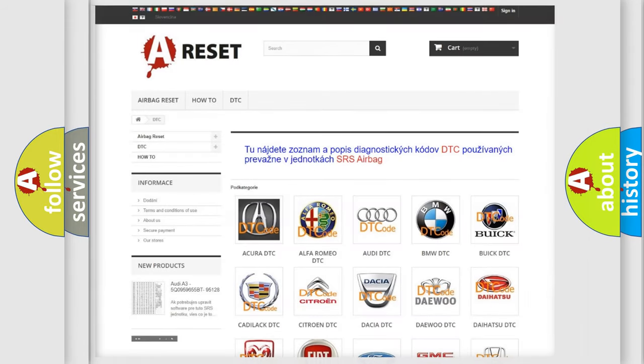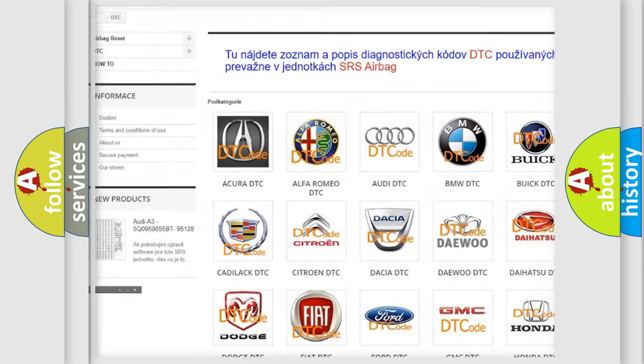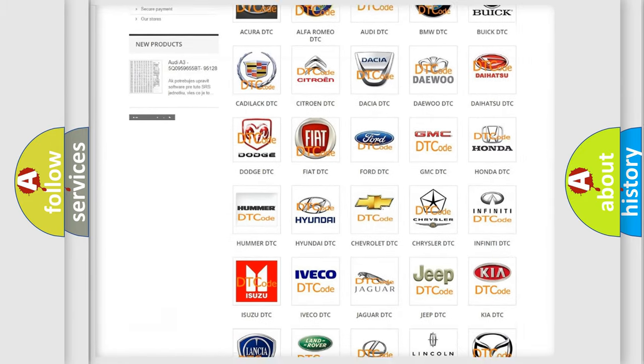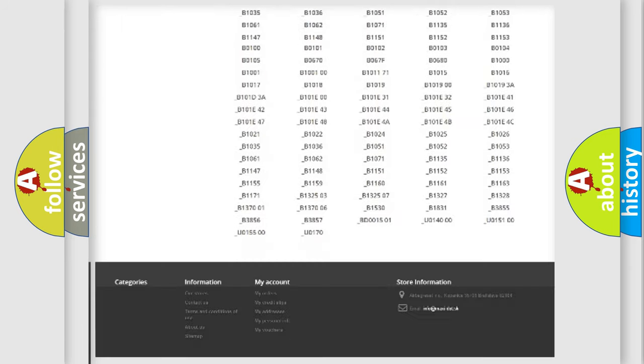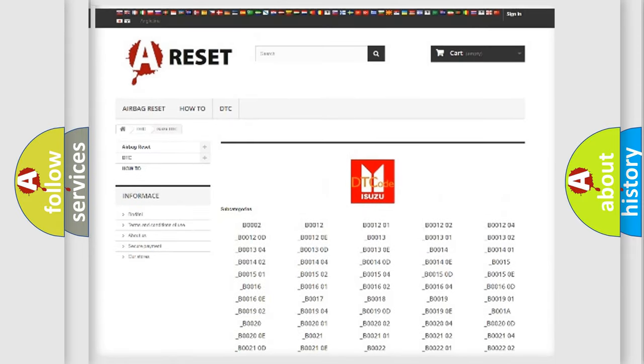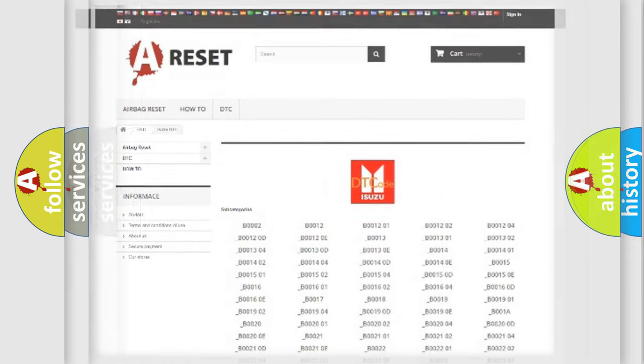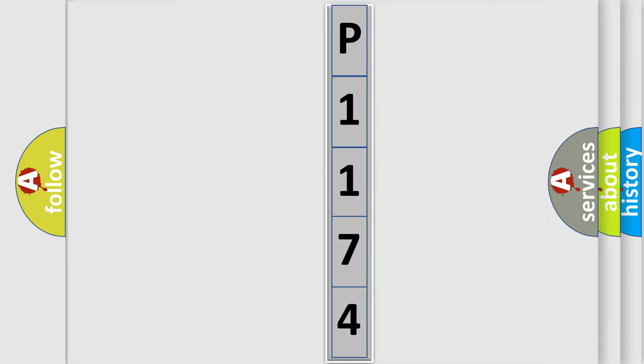Our website airbagreset.sk produces useful videos for you. You do not have to go through the OBD2 protocol anymore to know how to troubleshoot any car breakdown. You will find all the diagnostic codes that can be diagnosed in Isuzu vehicles, and many other useful things. The following demonstration will help you look into the world of software for car control units.